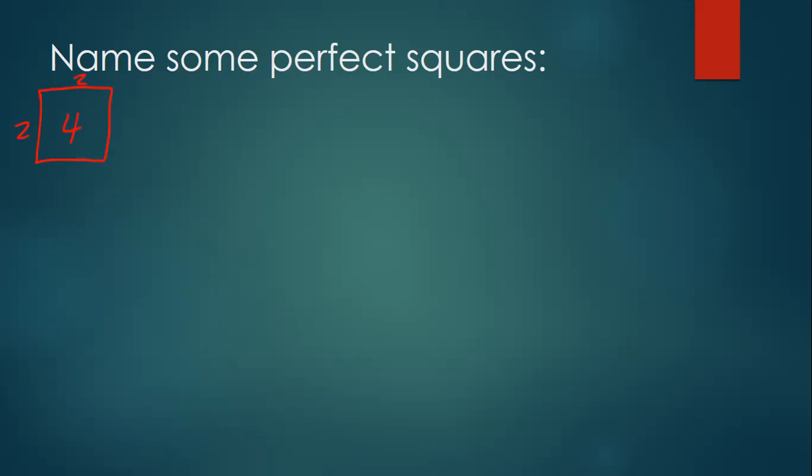So what are my other perfect squares? We got nine. What else? Sixteen. Sixty-four. Thirty-six. Eighty-one. Forty-nine. One hundred. One forty-four. One twenty-one. Two twenty-five. That's a good one. One. Yes. One sixty-nine.